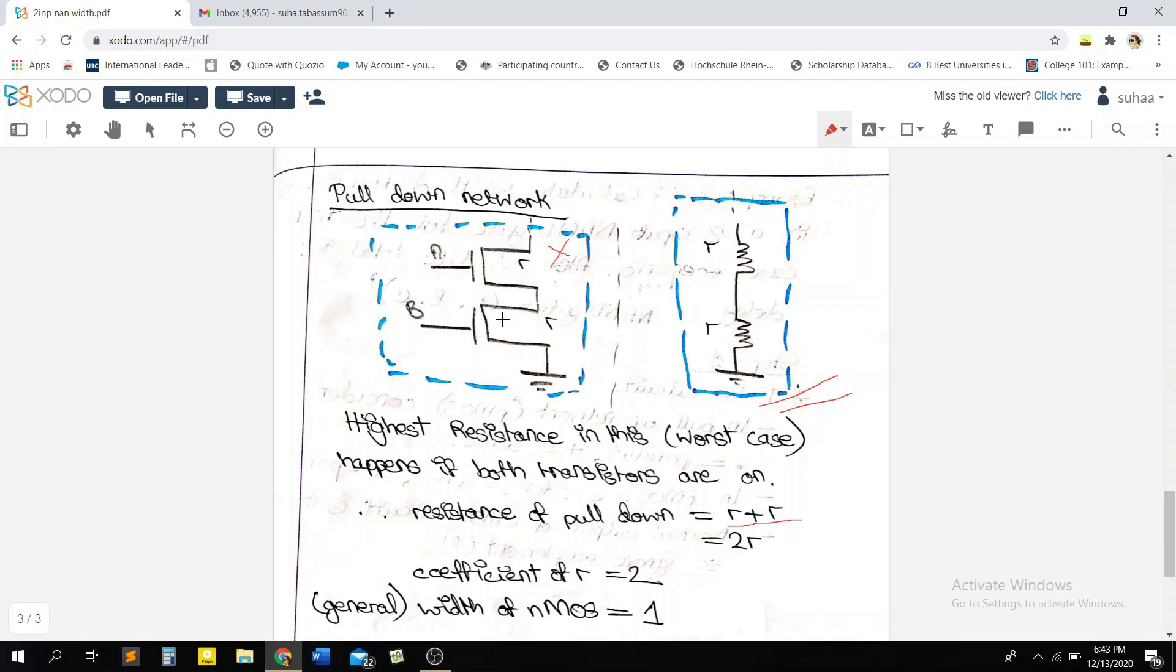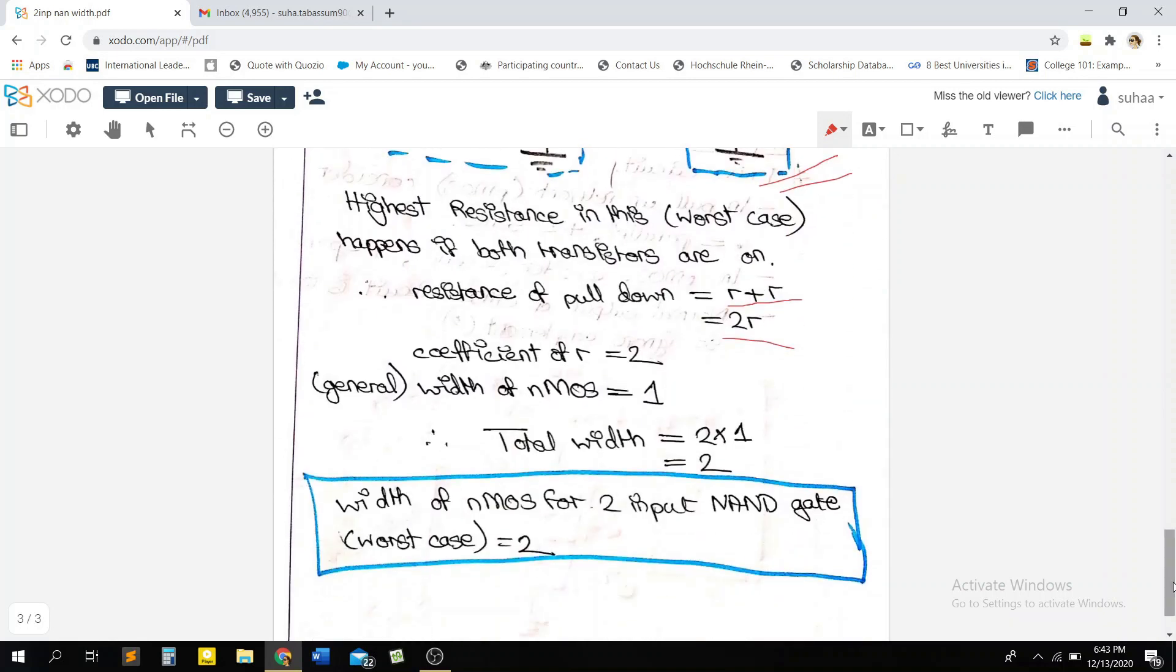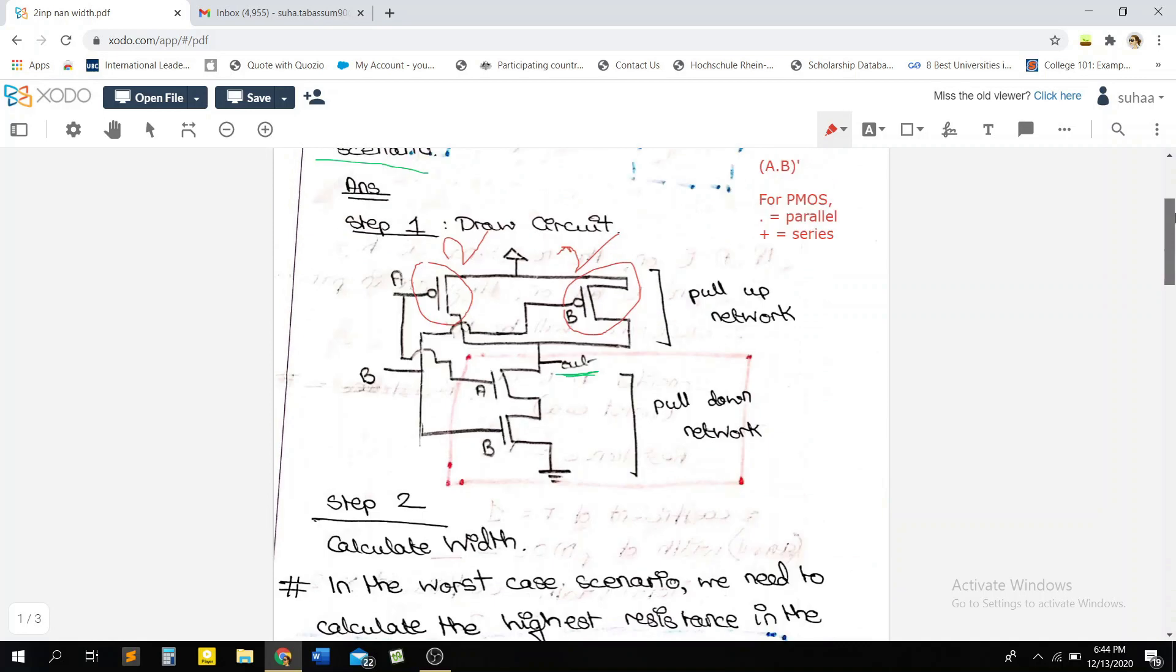So in this case, since both of them are on - they have to be on, otherwise the circuit will get broken - since they're in series, our total resistance is 2r. Now you'll remember from the previous video that the width of an nMOS is generally 1. So the coefficient of r, we can get it here, is 2. So I've written 2 here, and the width is from the previous video, and our total will therefore be coefficient into width, which is basically equal to 2.